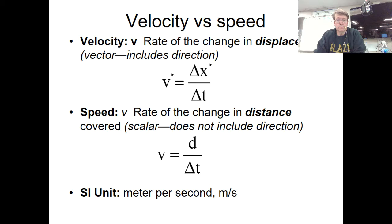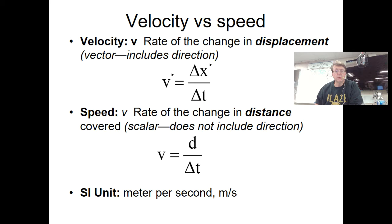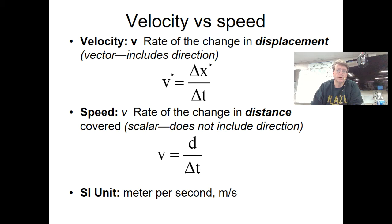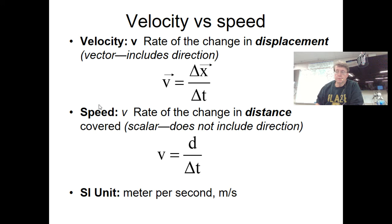We can also refer to things moving with speed. The only difference in physics between velocity and speed is that velocity uses displacement — the change in position — whereas speed uses distance, which is the path length during the movement. Displacement also has direction to it, so we use displacement almost exclusively in physics instead of distance. Velocity is a vector and includes direction; speed is defined as distance over time, where distance doesn't include a direction. Both use units of meters per second.